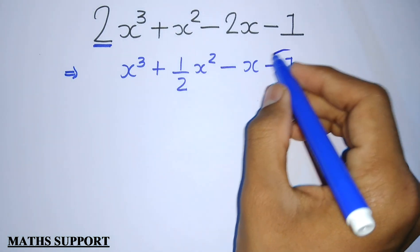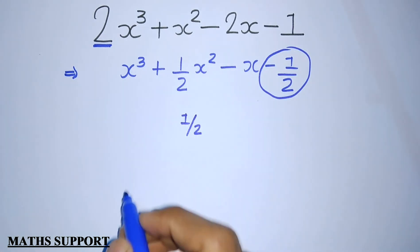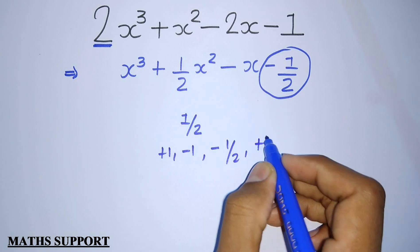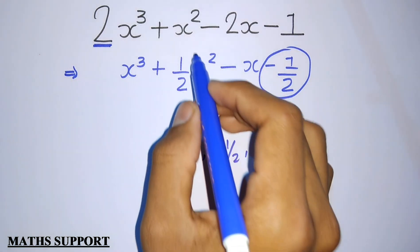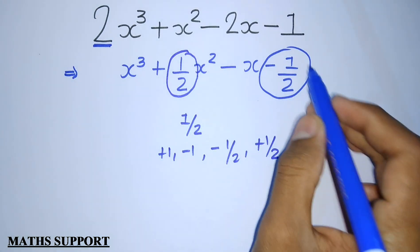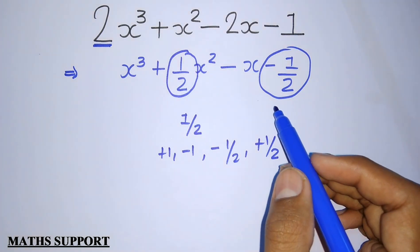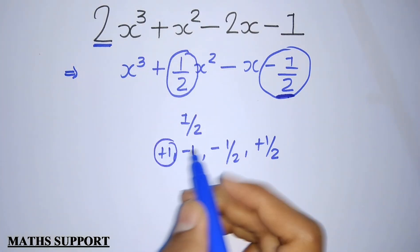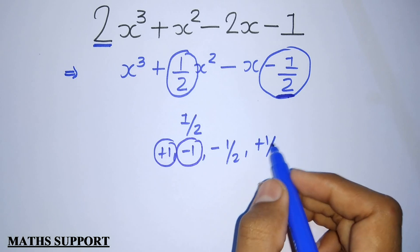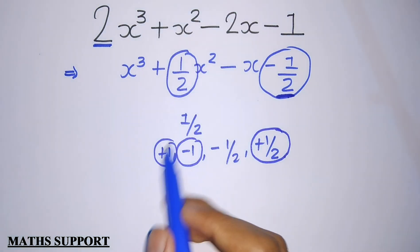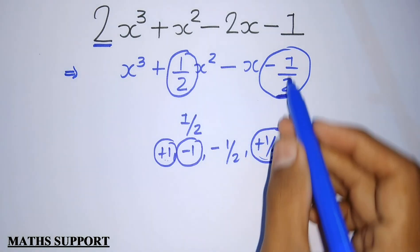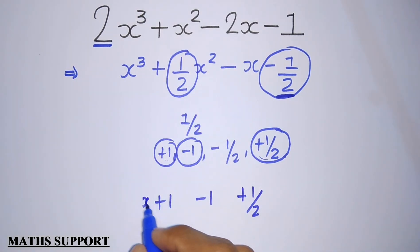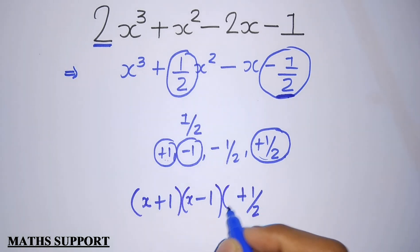Now it is a simple case. The constant term is 1/2, so the factors of 1/2 are 1 and 1/2, giving plus 1, minus 1, minus 1/2, and plus 1/2. Select three values such that their addition is 1/2 and multiplication is minus 1/2. We need two positive values and one negative value. Selecting plus 1, minus 1, and plus 1/2: addition is plus 1 minus 1 plus 1/2 = 1/2, and multiplication is minus 1/2.